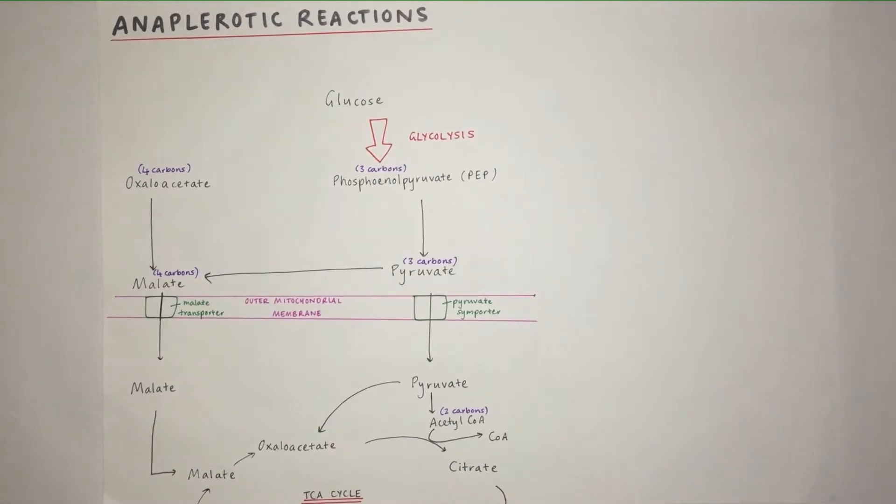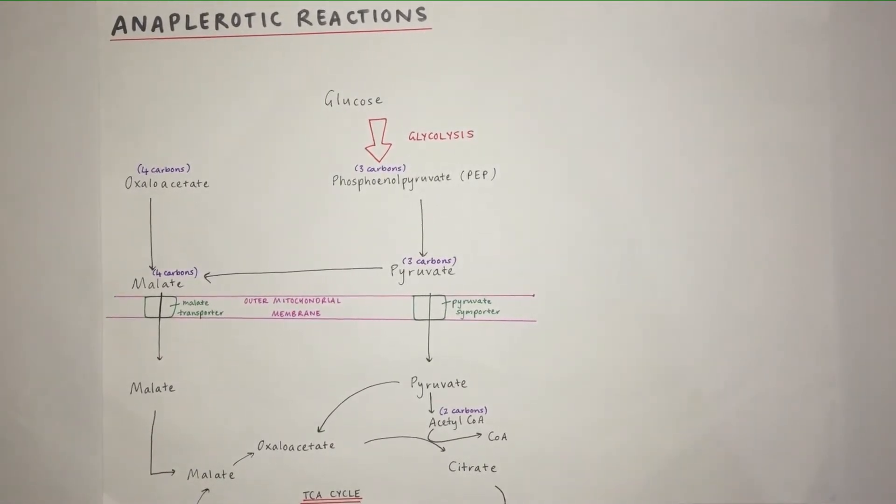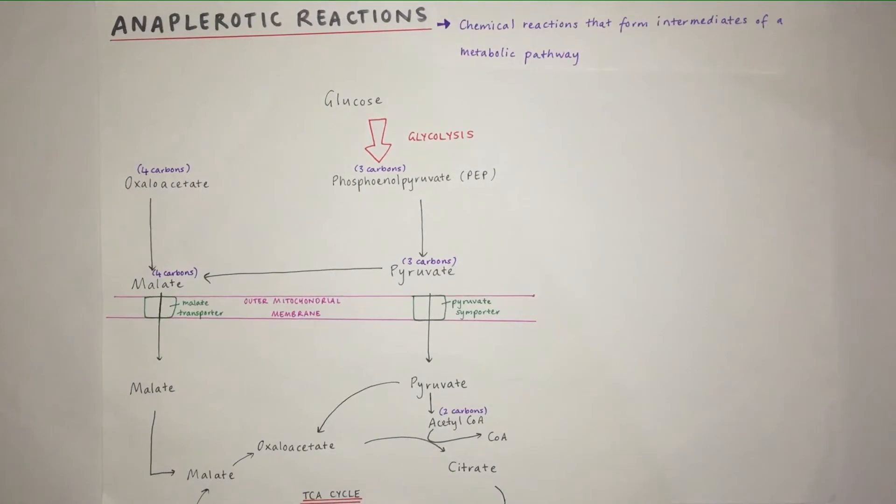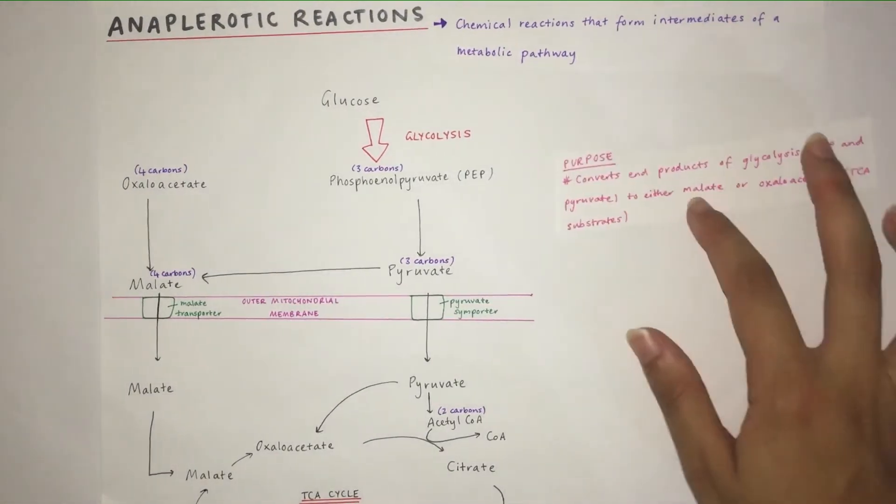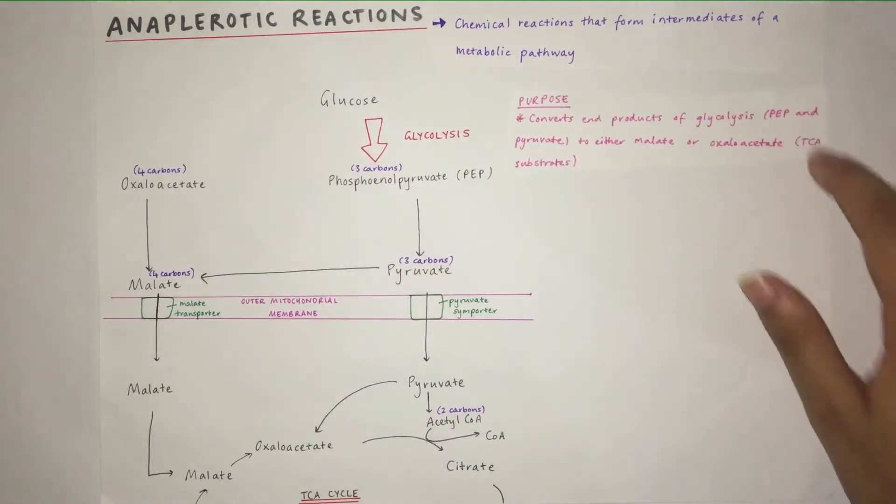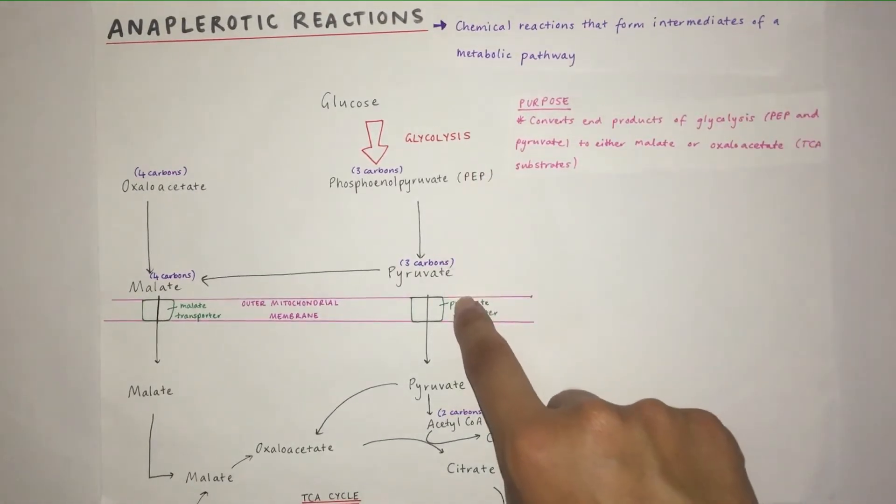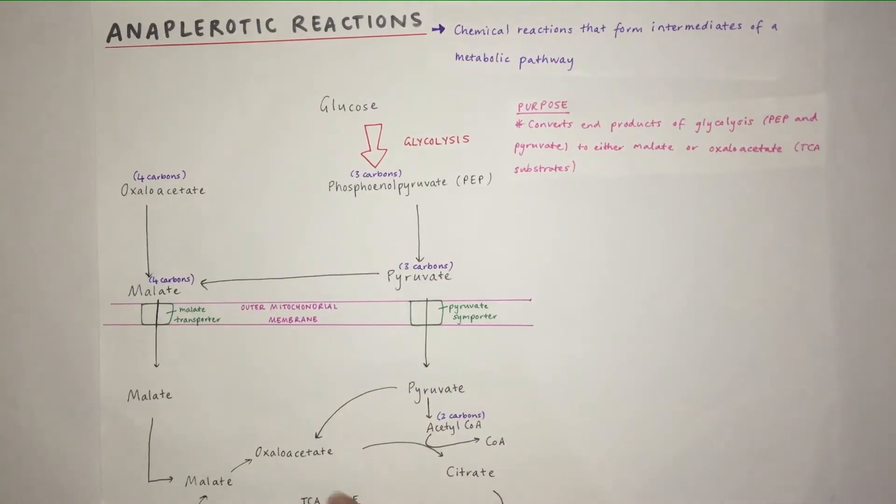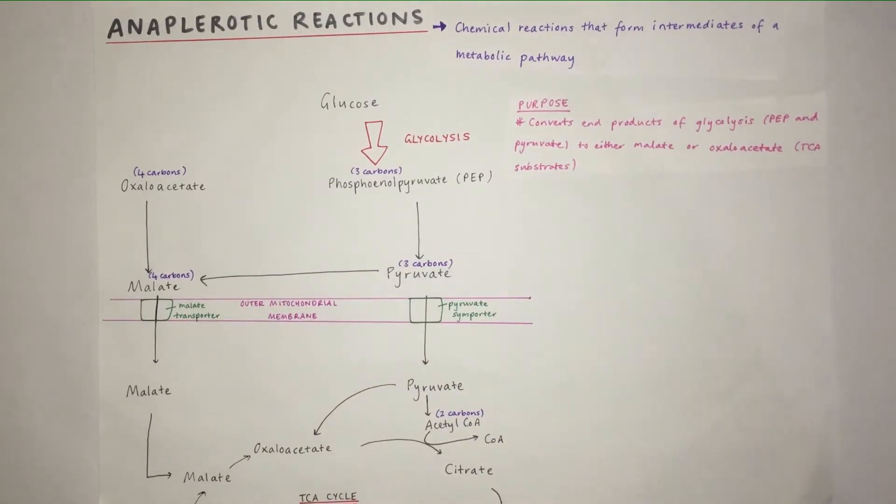In this video we're going to discuss anaplerotic reactions. They're chemical reactions that form intermediates of a metabolic pathway. The purpose of anaplerotic reactions is to convert end products of glycolysis such as PEP and pyruvate to either malate or oxaloacetate, which are TCA cycle substrates.